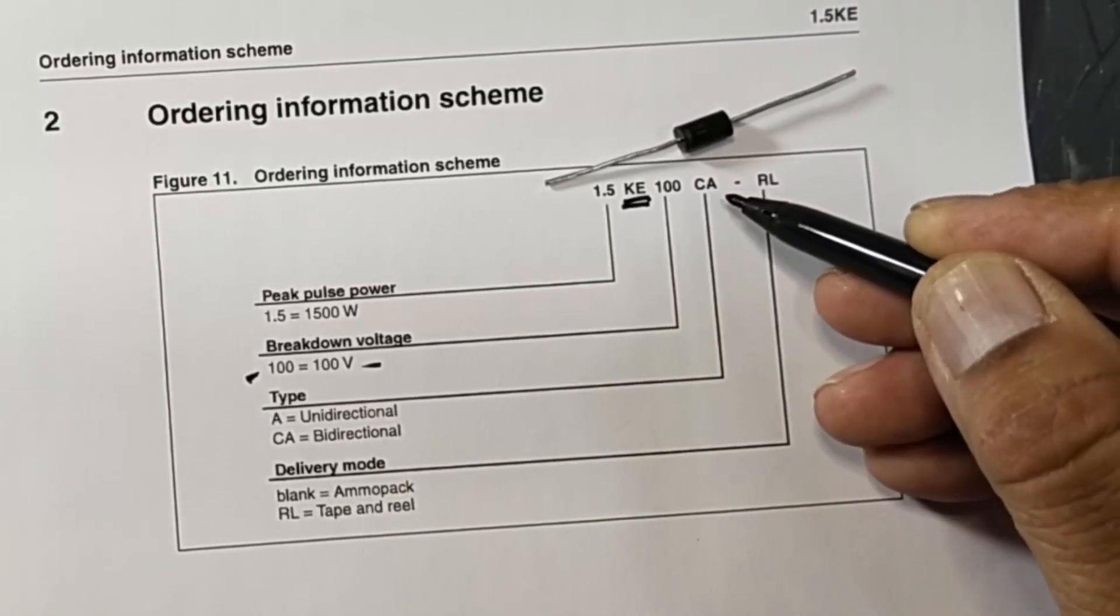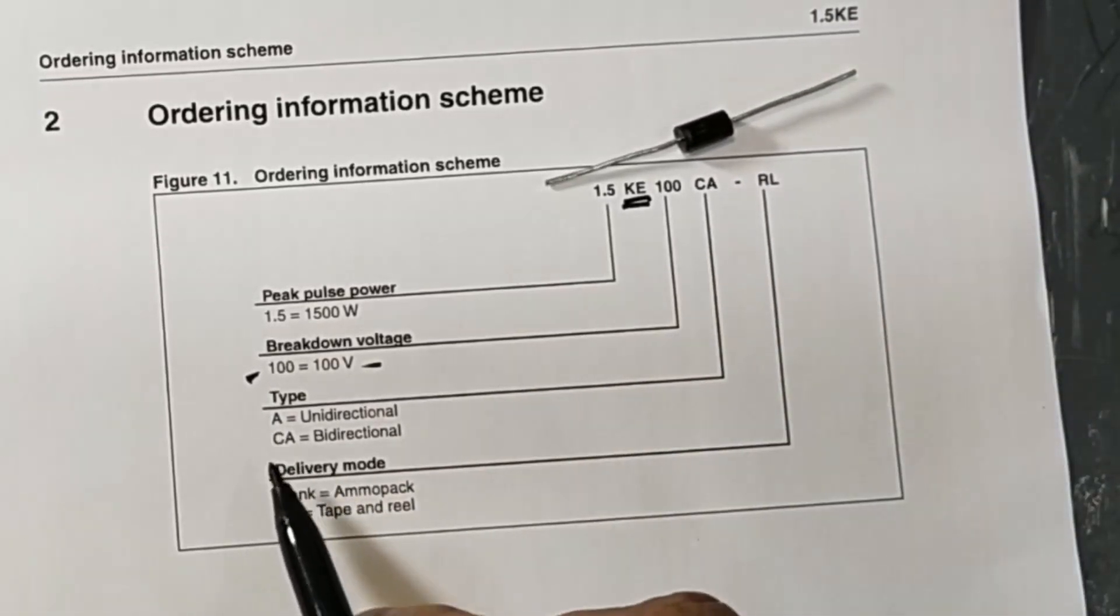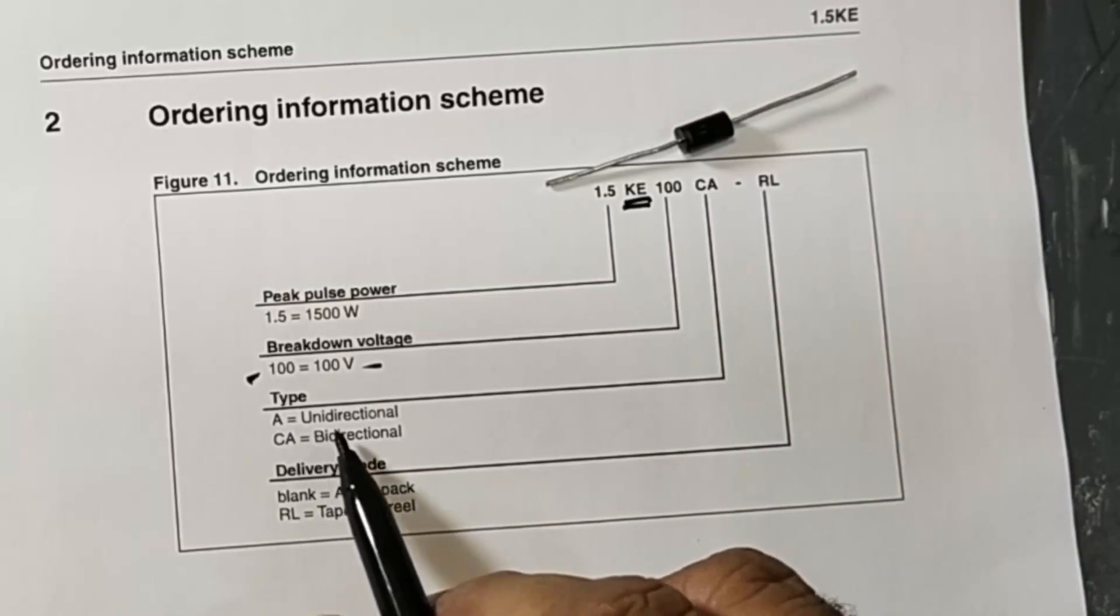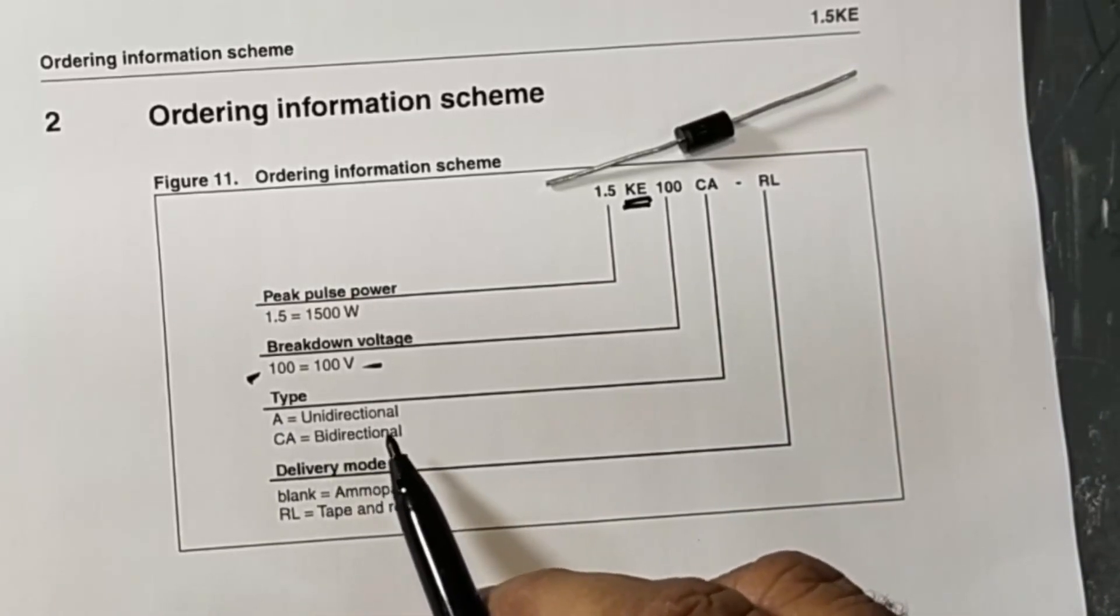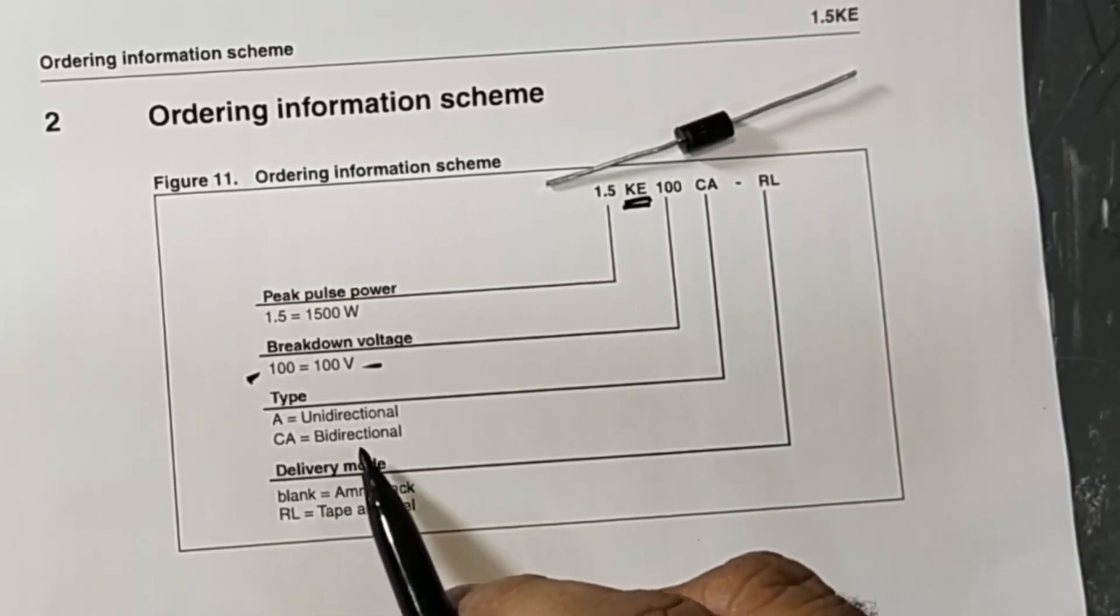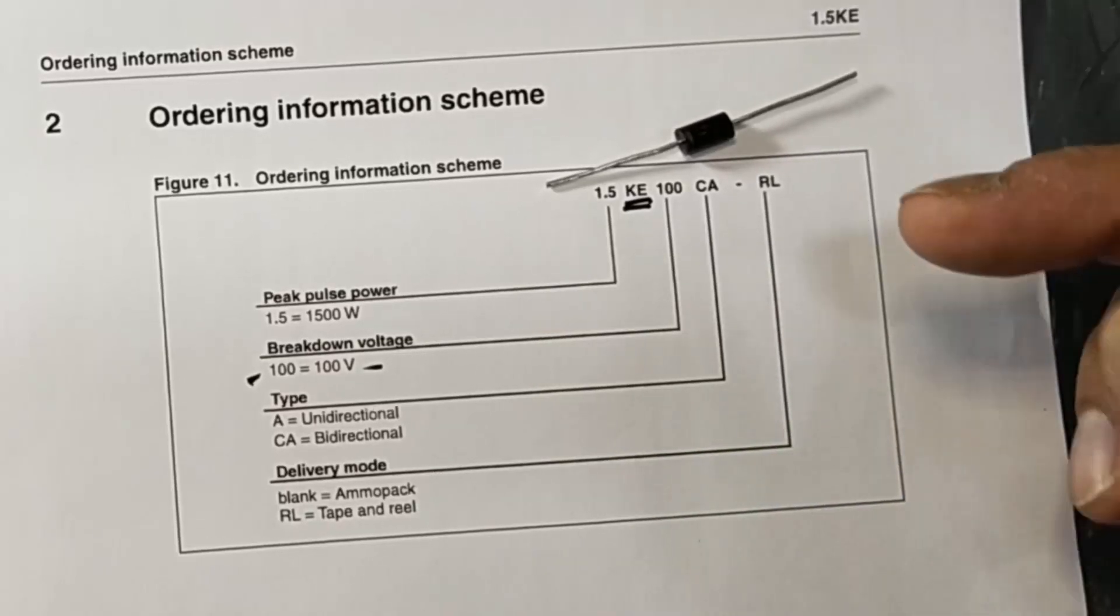And then it has CA, A, RCA types. For A - unidirectional, it is used in DC circuits. If it is CA, then it will be used in AC circuits.